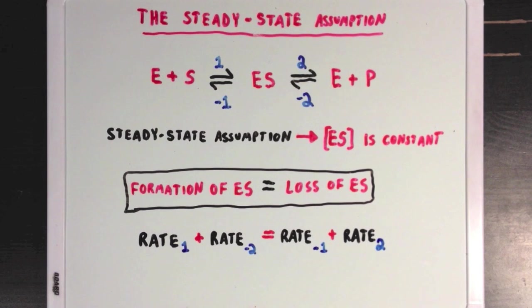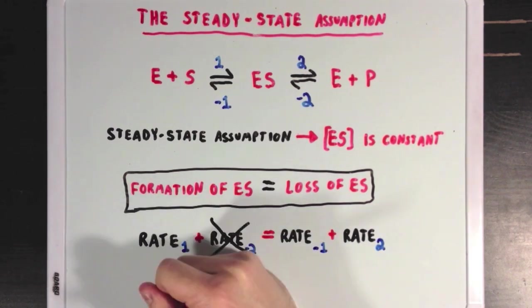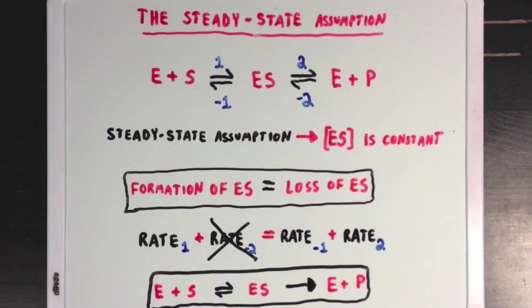Now also remember that products very rarely go back to reactants, since these reactions are usually thermodynamically stable. So rate minus two is going to be so small in comparison to rate one that we can really just cross it out, which means that we can swap out that second double-headed arrow for a single-headed arrow.